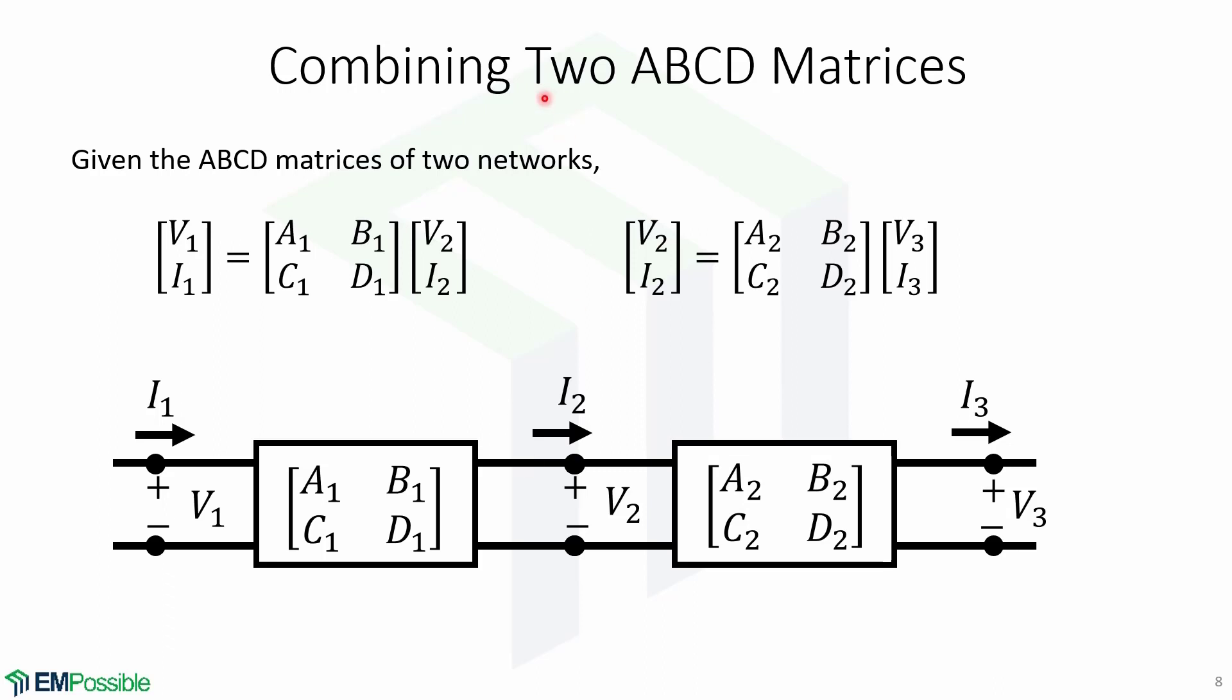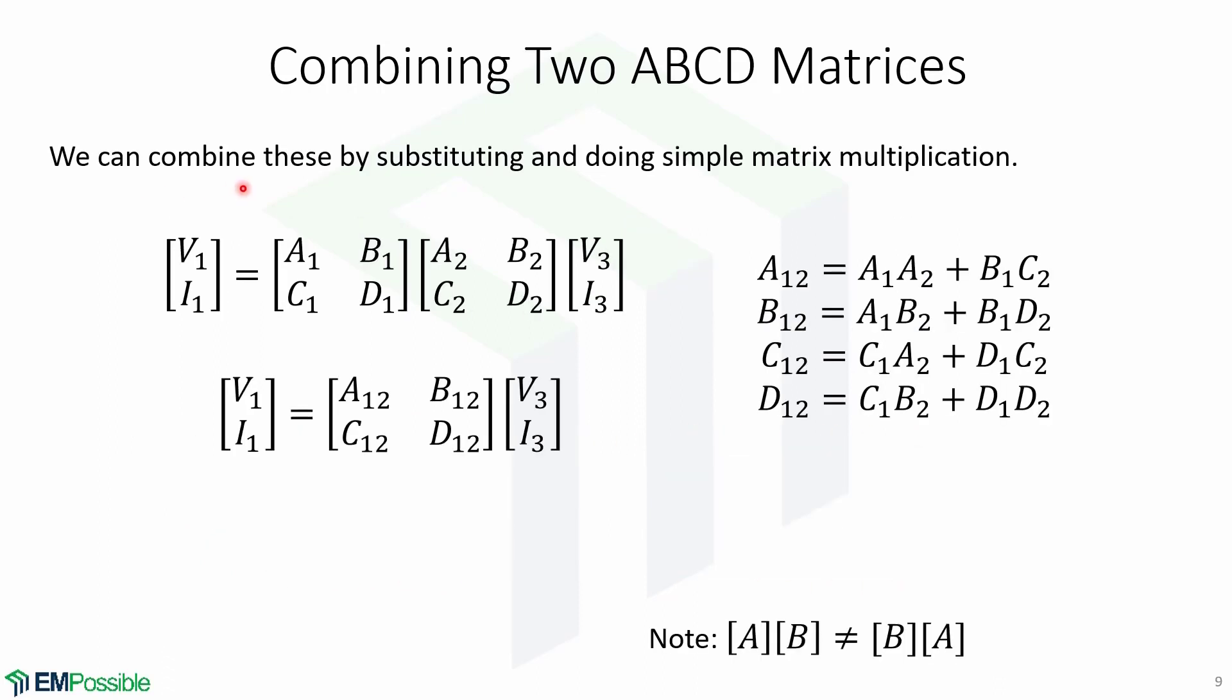Now we will learn how to combine two ABCD matrices. We are given these ABCD matrices of two networks and we want to combine them in this form as a series connection of transmission matrix 1 and transmission matrix 2. Now we can combine these matrices by substituting and doing simple matrix multiplication.